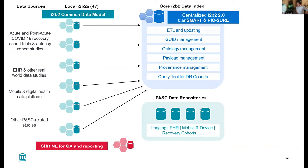The main idea, shown here in blue, is to establish a high-volume core I2B2 data index, which would entail indexing all these types of data across all of these I2B2s. The various tasks include ETL and data updating, managing patient linking through a GUID — a global unique identifier — connecting to other types of data, and payload management across PASC data repositories including imaging data, EHR, and the various recovery cohorts.